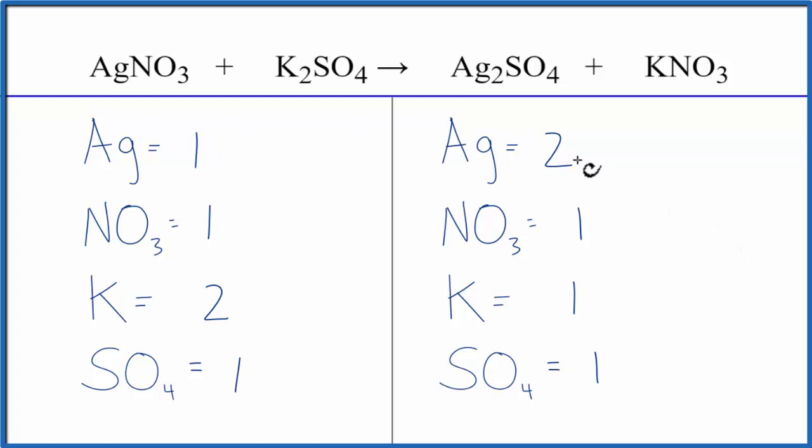We have one silver, two silvers. Let's put a coefficient of two in front of the AgNO3. One times two, that'll give us two silvers. Those are balanced, but the two applies to everything. So we have the one nitrate ion times the two. That'll give us two of those.